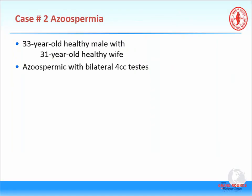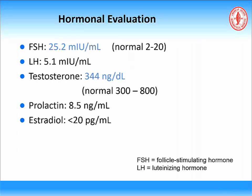Moving on to the next case: a case of azoospermia, meaning zero sperm in the ejaculate. This is a 33-year-old healthy male with a 31-year-old healthy wife. He is azoospermic on several semen analyses, and on exam he has bilateral 4 cc testes — normal testis volume is 15 to 20 cc. His hormonal evaluation shows FSH of 25, LH of 15, testosterone slightly low but within normal range, and prolactin and estradiol within normal limits.